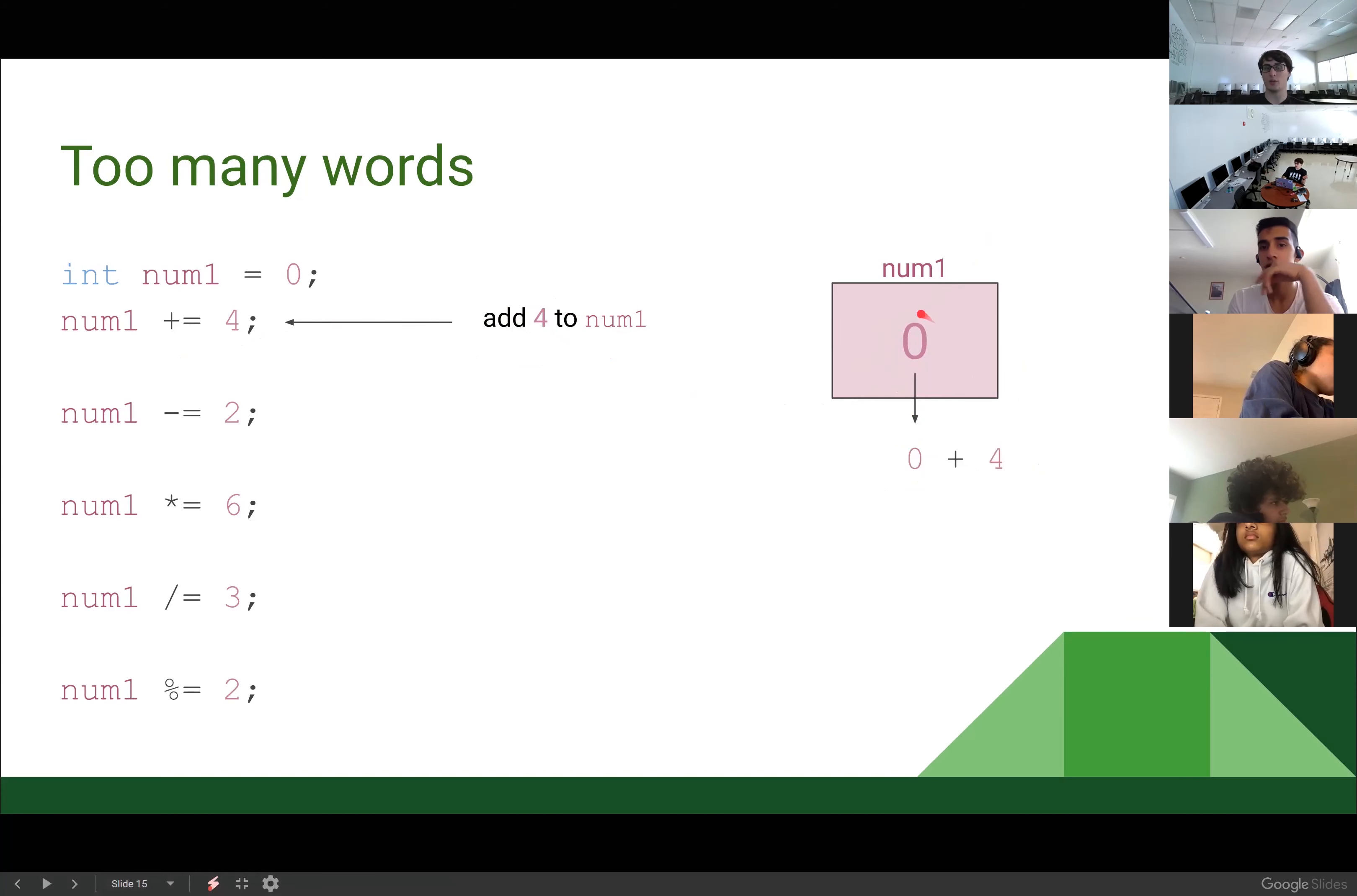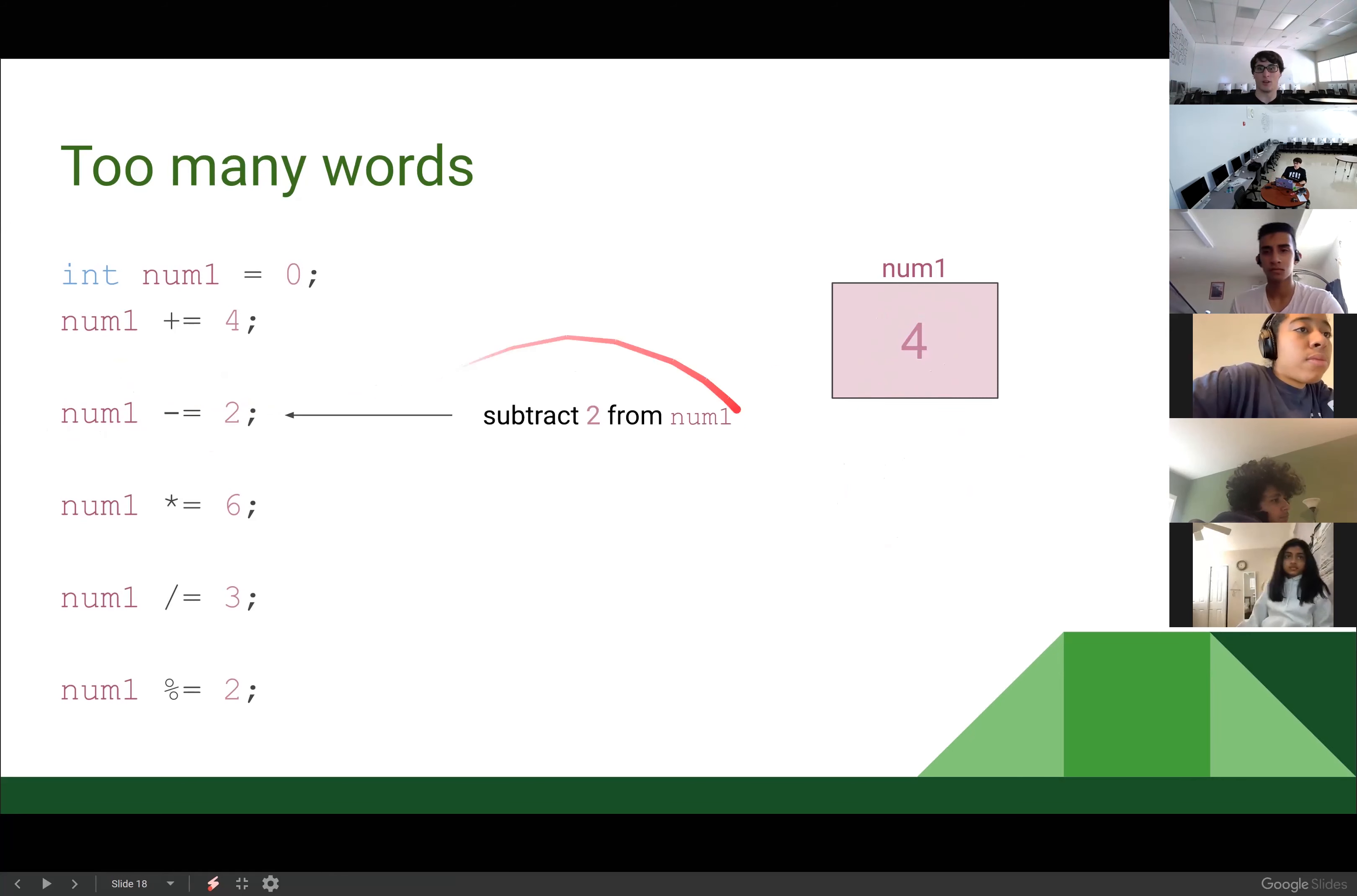Next, we have num1 minus equals two. So we're going to subtract two from the value held in num1 and then overwrite num1 with that new value. So I'm not going to repeat that process with the popping it out every time. So what is four minus two? Two. It's two. So num1 will now equal two.